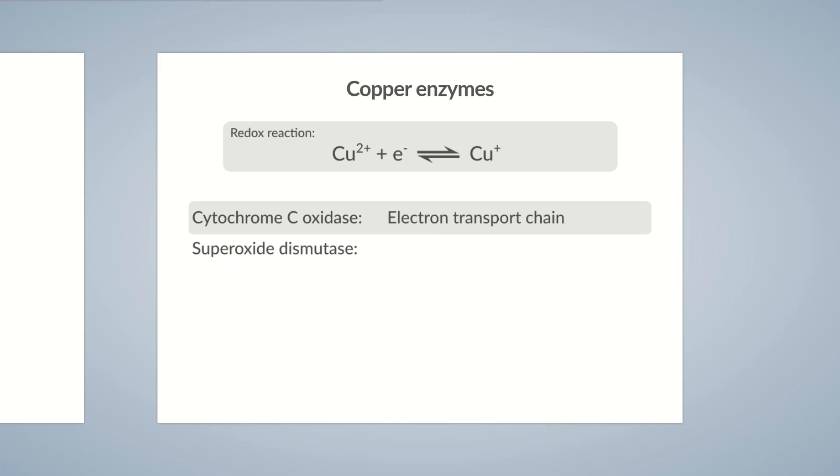Superoxide dismutase is a key enzyme in cellular detoxification. It can neutralize oxygen radicals, namely the free radical superoxide, which has the molecular formula O2. Copper acts physiologically as an antioxidant and protects cells against damage from oxidative stress.